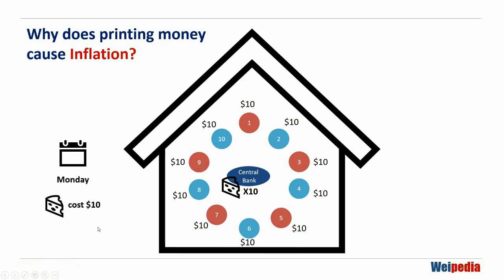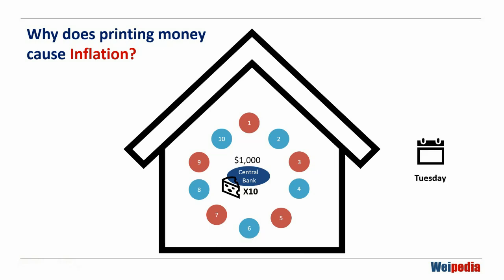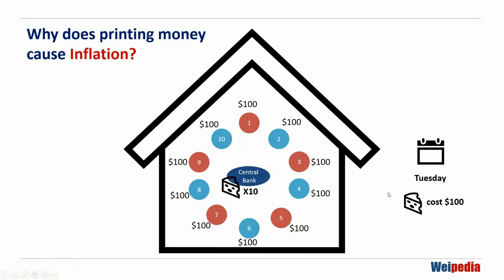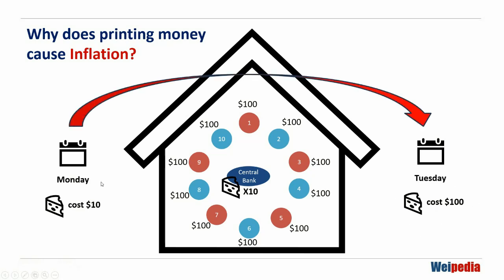The cost price of one cheesecake is $10. Now on Tuesday, you decided to print $1,000 and evenly distributed this to 10 persons, so each gets $100 US dollars. Each cheesecake today will cost $100 US dollars. The inflation is 10 times — yesterday it was $10, today it is $100. That's what happens when money is printed: it causes inflation.